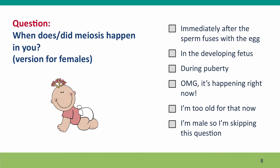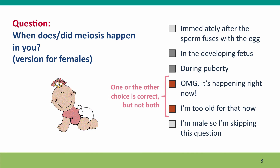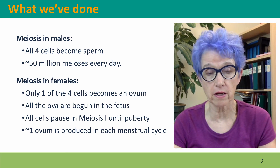Here's the version of the question for the women in the class: when does or did meiosis happen in you? The answer is that it happened in the developing fetus, then it hung in there, and then started actively happening again during puberty — one cell at a time. If you're premenopausal and in your fertile years, it's happening right now. If you're postmenopausal, then it has stopped.